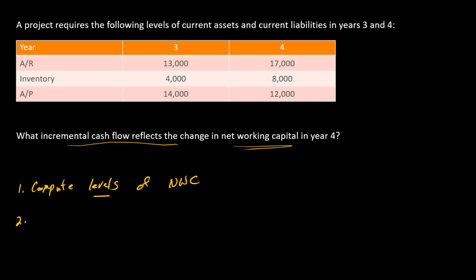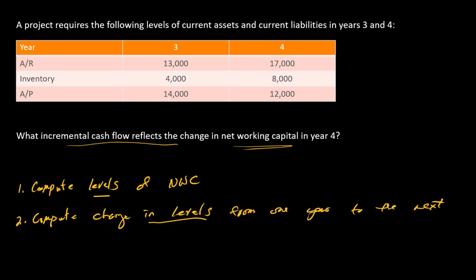Second, we need to compute the change from one year to the next — the change in levels. And then third, the cash flow equals minus the change in level. So if working capital increases, we have a cash outflow, and if working capital decreases, we have a cash inflow.